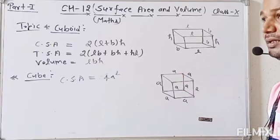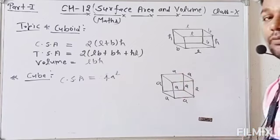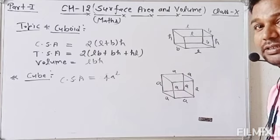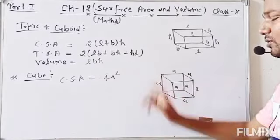For curved surface area, top and bottom are left out. So how many faces? 4 faces. And the surface area - side squared. So, CSA of a cube is 4 side squared.